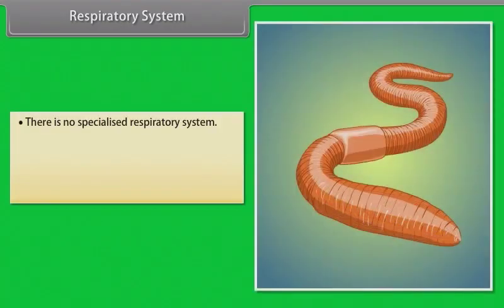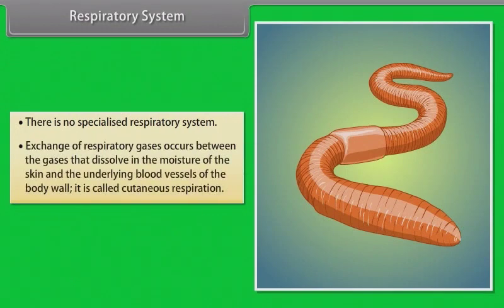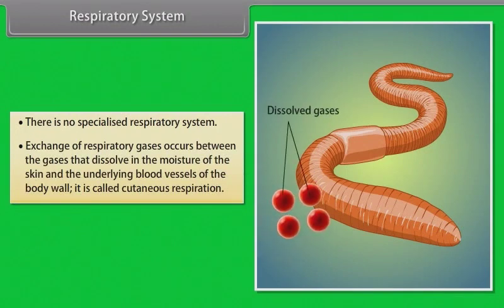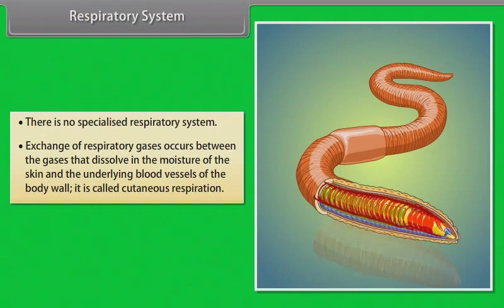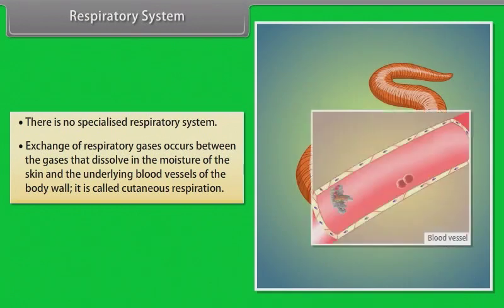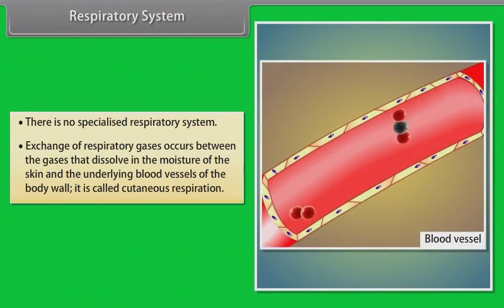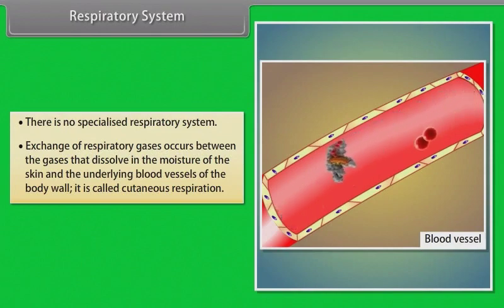There is no specialized respiratory system in earthworm. Exchange of respiratory gases occurs between the gases dissolved in the moisture of the skin and the underlying blood vessels of the body wall. This is called cutaneous respiration.